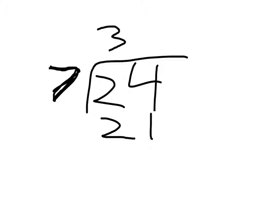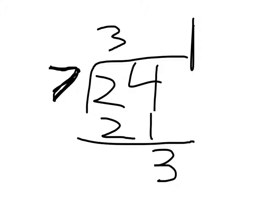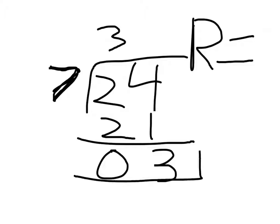So you have to write the 3 at the top, and we have to write 21 at the bottom. Now we subtract them: 4 minus 1 is 3, 2 minus 2 is 0. And we put the line down and write R for remainder. The remainder is 3 — so whatever is left at the bottom is the remainder.